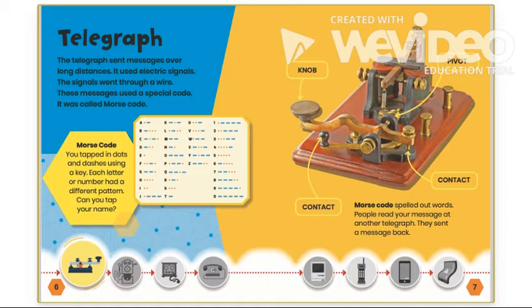Let's look at the different parts of the telegraph. Here you have the knob, contact, another contact, and a pivot.